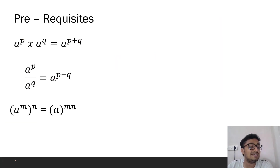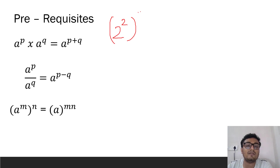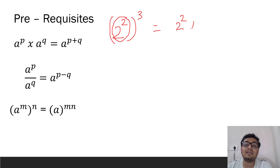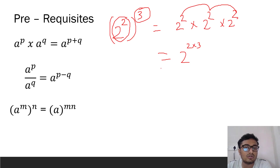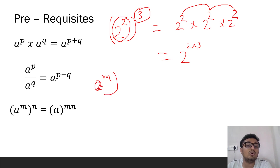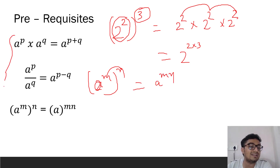The third rule: when you raise a power to another power, the powers multiply. For example, two squared raised to the power 3 means two squared is multiplied three times: 2² × 2² × 2² = 2 raised to 2×3 = 2 raised to 6. So (a raised to m) raised to n equals a raised to m×n. These are the prerequisites for understanding the logarithmic table.